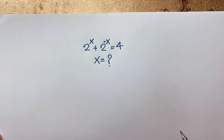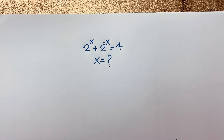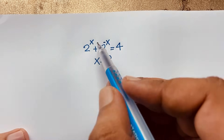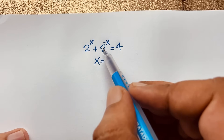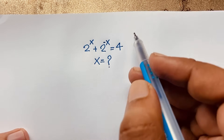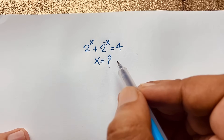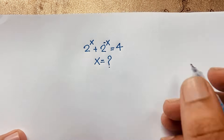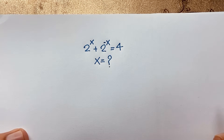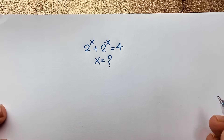Hello everyone, welcome to Rasta's classroom. Today we have solved a nice math problem. This question is: 2 to the power x plus 2 to the power negative x is equal to 4. x is equal to what? How to solve today's math problem?